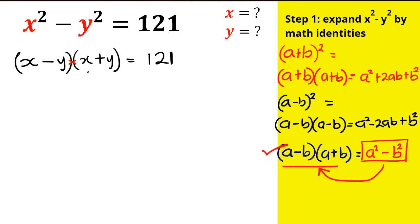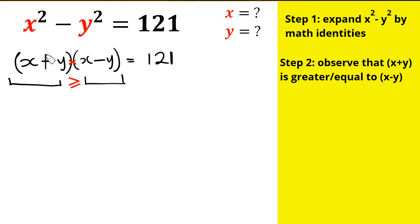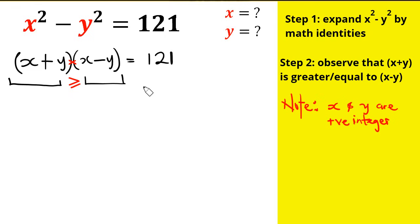This means we are multiplying two things together to get 121. Step 2: observe that x plus y is greater than or equal to x minus y. This is reasonable because the addition sign in x plus y means it tends to be larger than x minus y. Note that x and y are positive integers, so we only consider positive integer values.